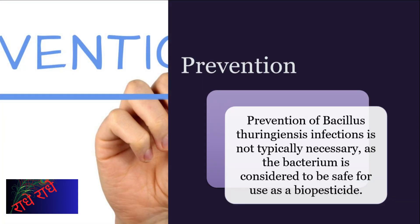B. thuringiensis is a viable option for biopesticide use, providing a straightforward solution for controlling common pests. The natural properties of this biopesticide make it a practical choice for numerous insect and arthropod infestations. Additionally, it is safe for use in food production and poses no threats to human health or the environment.